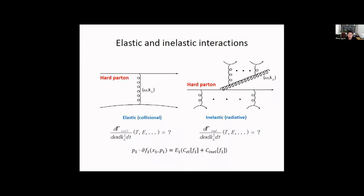For jet quenching studies and heavy quark energy loss studies, we usually consider two processes: elastic scattering between the hard parton and the medium partons, and radiative inelastic collisions. A parton can interact with the medium through multiple scatterings, which can induce additional gluon radiation compared to the vacuum. The key quantities needed are the elastic collision rate and the radiation spectra, which go into the Boltzmann transport equation used in the LBT model.